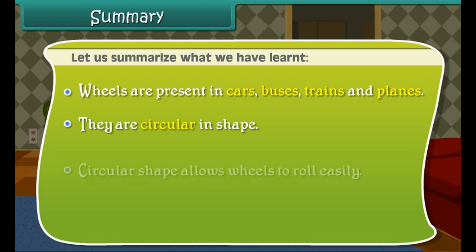Let us summarize what we have learned. Wheels are present in cars, buses, trains and planes. They are circular in shape, and their circular shape allows wheels to roll easily.